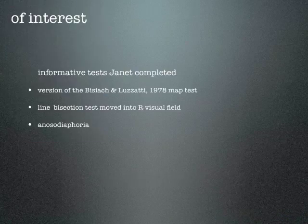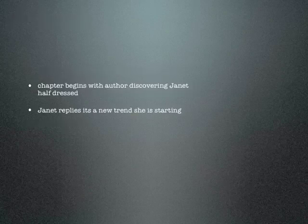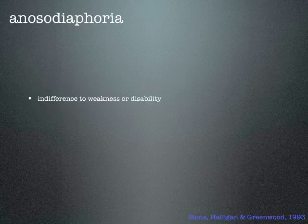So what did Janet teach us about neuropsychology? She completed some of the more interesting tests in the field. With the Biasik and Lusati map test — using a spatial map of New Zealand with the North and South Islands — she confirmed the map was still intact. With the line bisection test slid into her right visual field, she still only attended the right half. Interestingly, Janet also demonstrated anosotoforia — an indifference to weakness or disability. Her marked and bizarre disabilities rarely seemed to trouble her; she seemed either indifferent or didn't notice them at all.